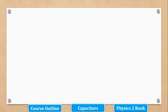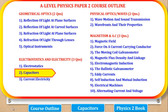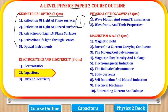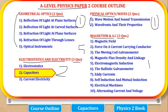Before we proceed, let's first look at the course outline for this paper. Physics paper 2 is divided into 4 parts. The first part is geometrical optics, where 2 questions come and a student must answer 1. Physical optics: 2 questions come and a student must answer 1. Then electrostatics and electricity: 3 questions come. And magnetism and alternating current: 3 questions come. You can choose to answer 2 from one part and 1 from another to make 5 questions, or 1 from one part and 2 from another — any combination is ok.